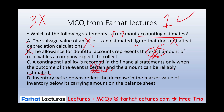By process of elimination, D is the correct answer. Let's confirm: Inventory write-down reflects the decrease in market value of inventory below its carrying value on the balance sheet — that is 100% correct. It reflects the loss of utility because the cost of the inventory is no longer valid; it is below its cost. Go to Farhat Lectures to look at additional MCQs on this topic. Accounting estimate is covered in financial accounting courses and also in auditing, since auditors review your estimates.